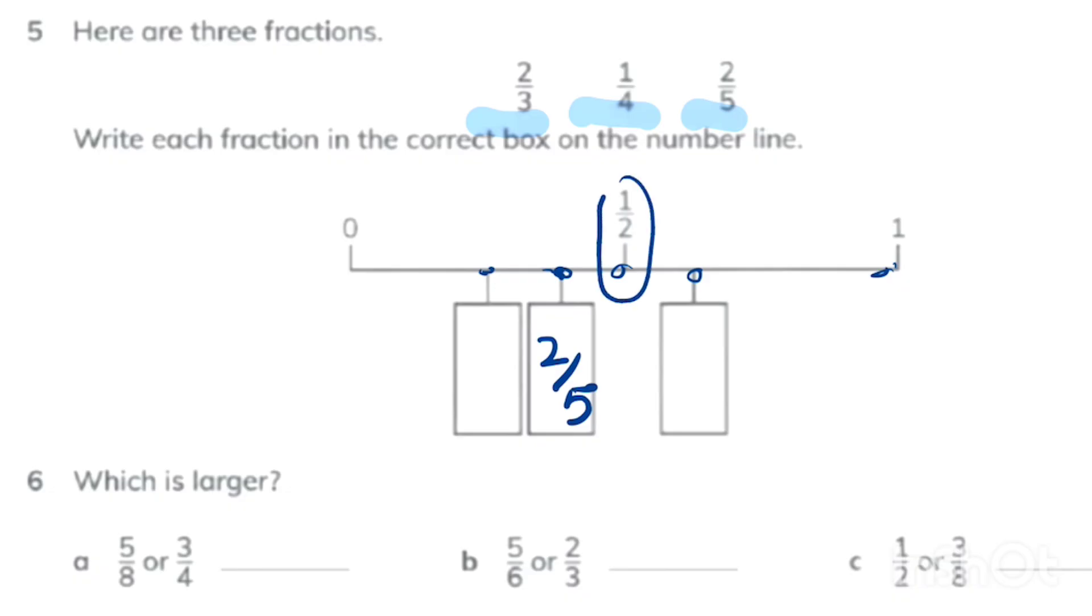Now let's consider 2 thirds. It says 2 parts from 3 parts which is obviously more than half. So I will write in the first right box nearest to half. Now I have 1 box and 1 fraction so I will write it here.